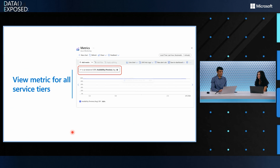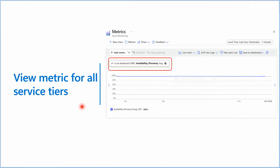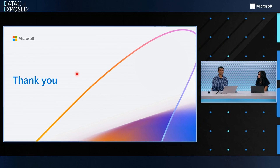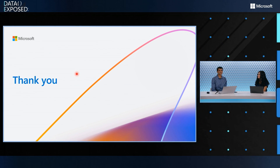If you want to see this metric in the portal — and it's available for all service tiers — pretty much all you do is go into the portal, select the database, add the availability metric, and you will see the SLA-compliant availability data for that database. We're very excited to have this data out and hope you leverage it and benefit from the monitoring.